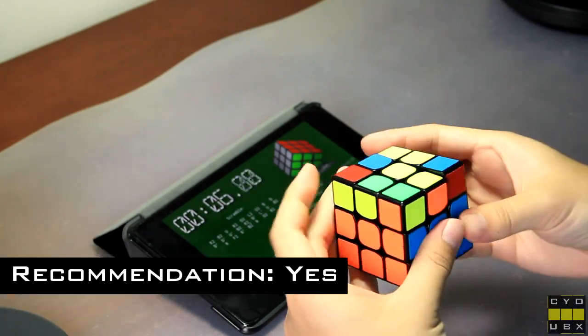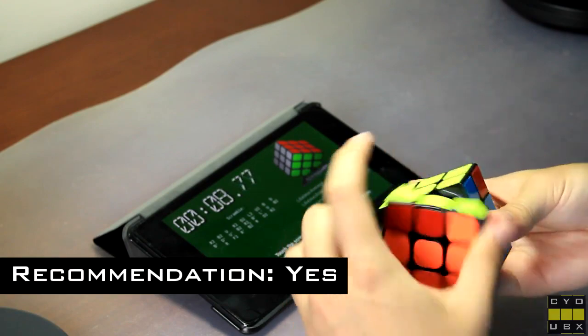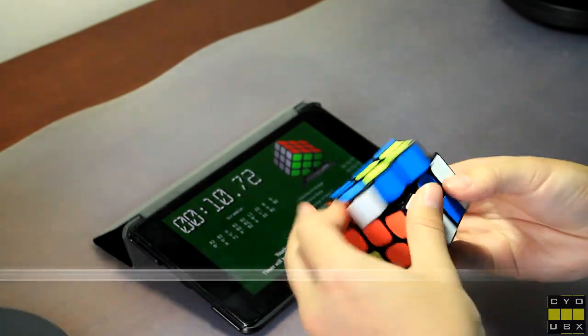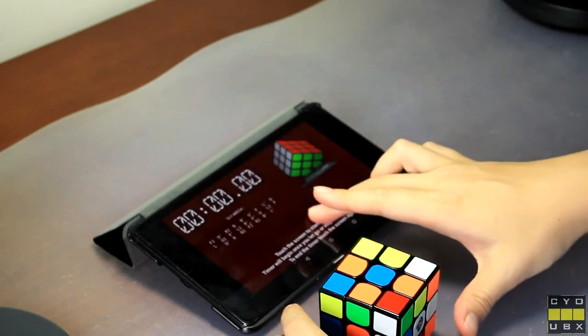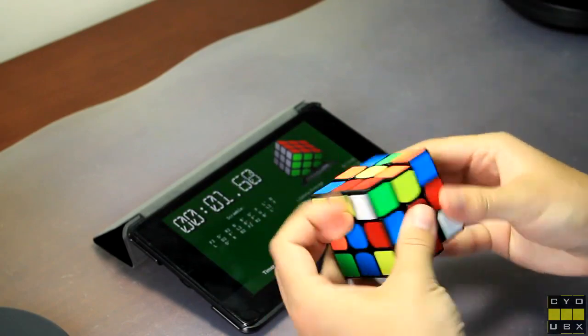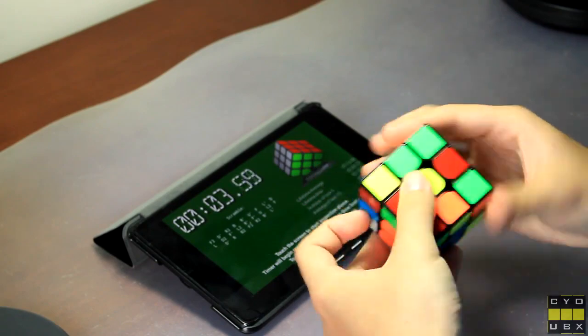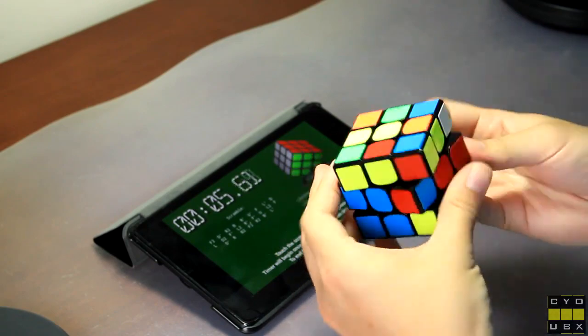I easily recommend the Kong's Design Mei Ying. The Mei Ying is a terrific cube and one of my all-time favorites. It's a cube that has everything I need: good corner cutting, amazing feel and overall great fluidity. I think it's a good cube for any level speed cuber.